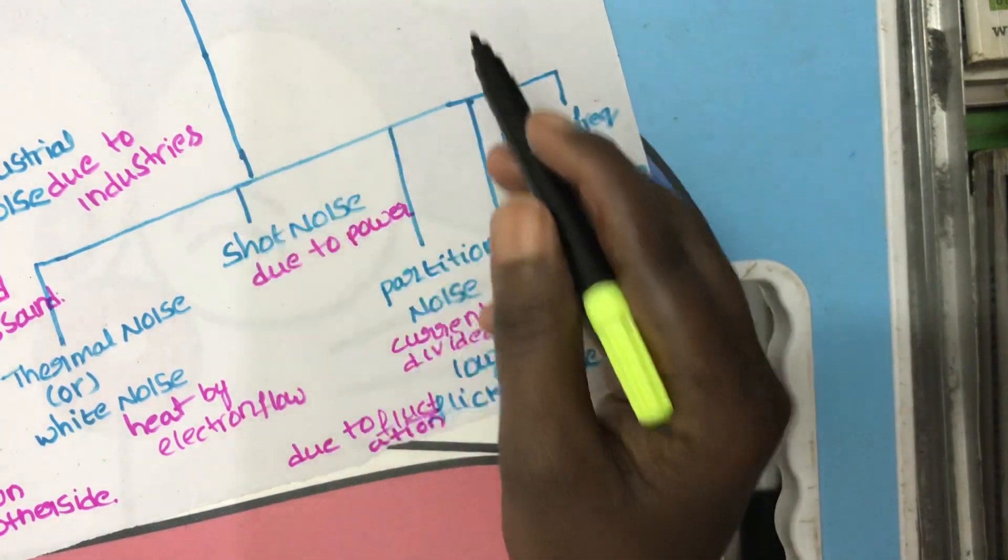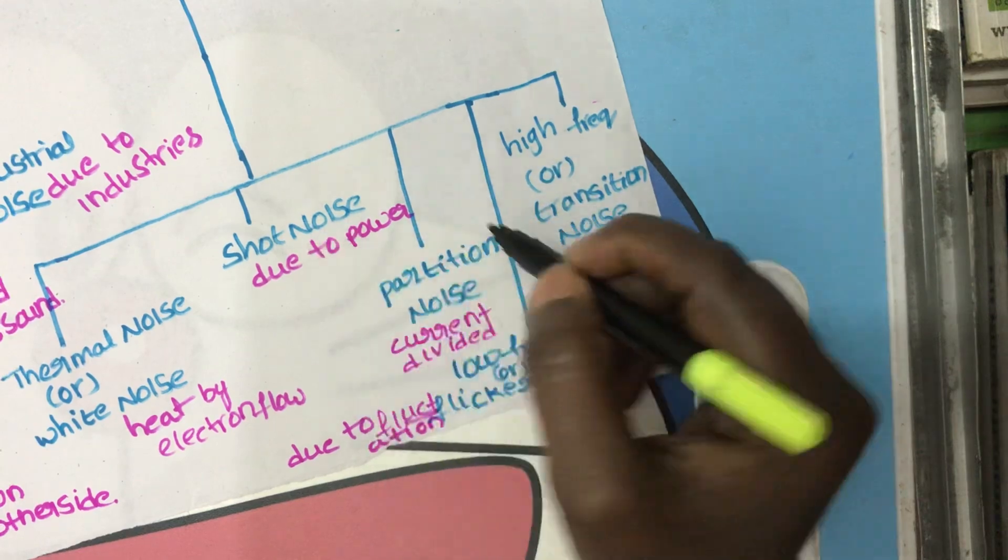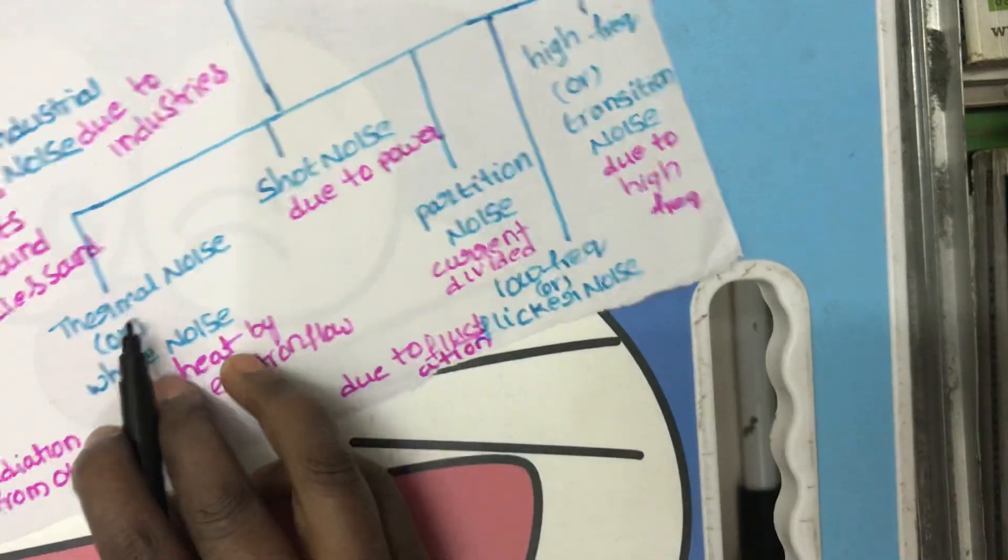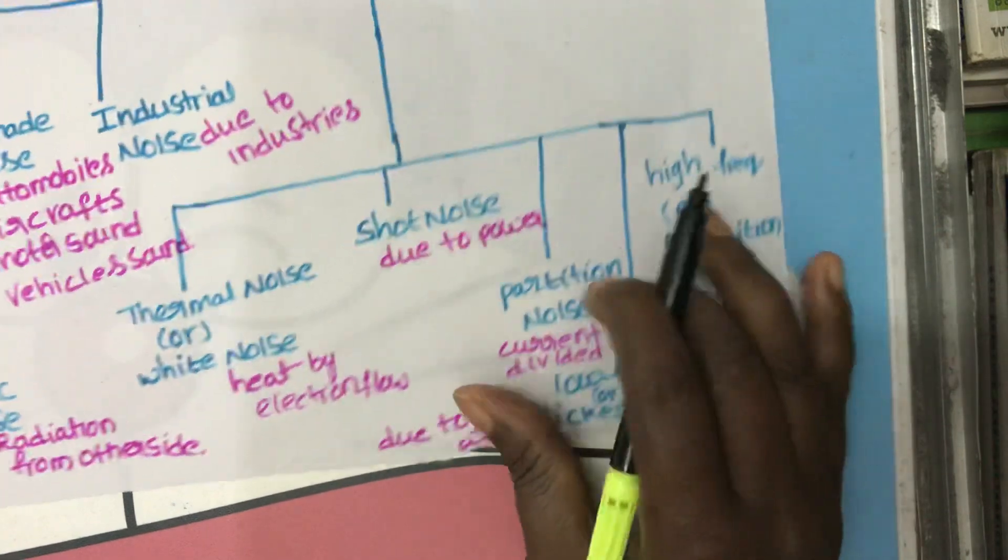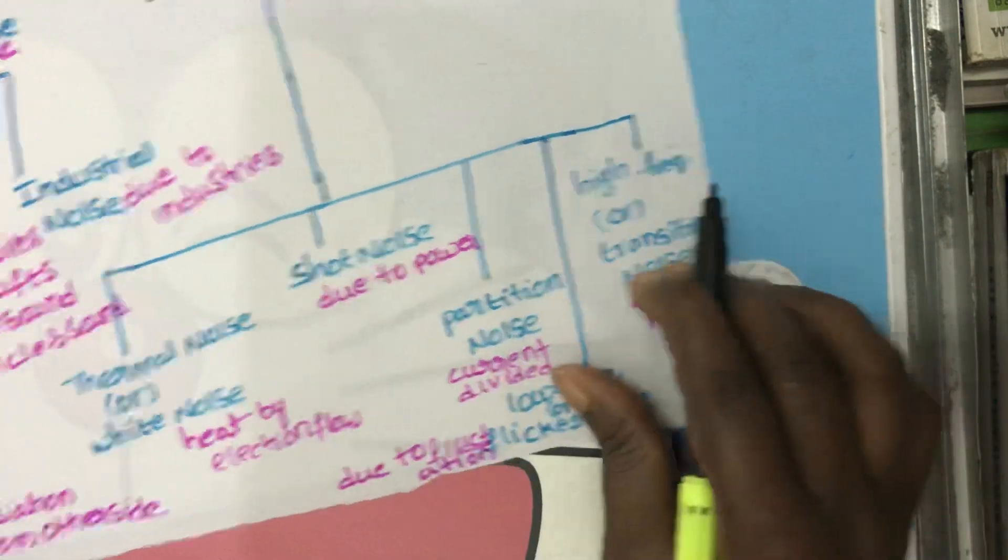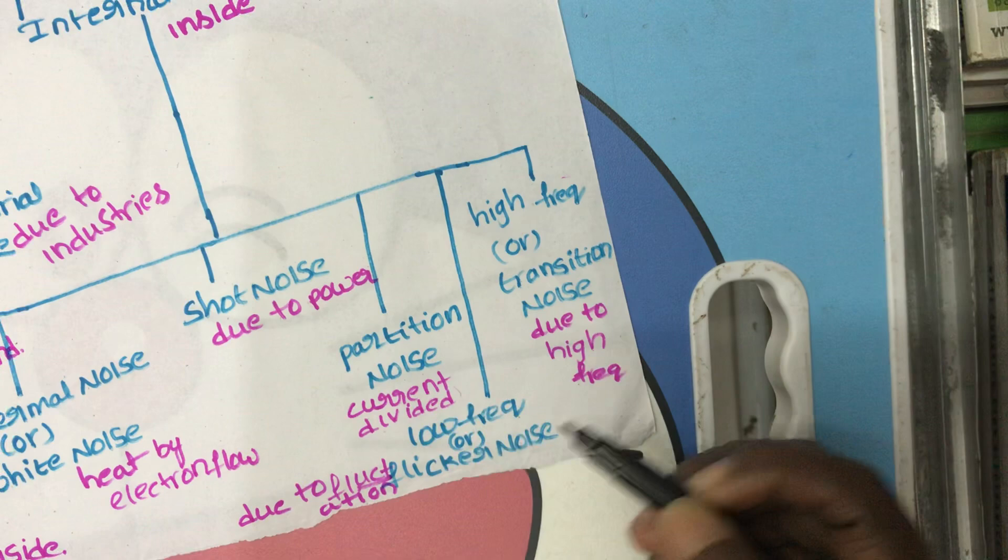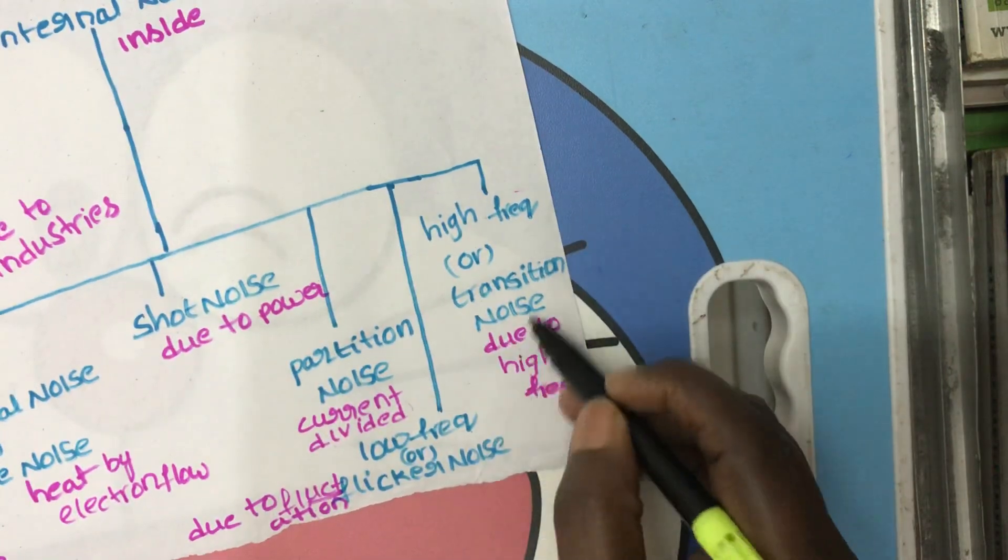Next we will see the internal noise. Internal noise is further classified into thermal noise or white noise, second one is shot noise and partition noise, and high frequency or transition noise.